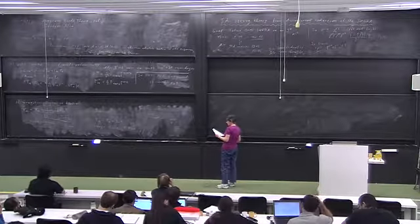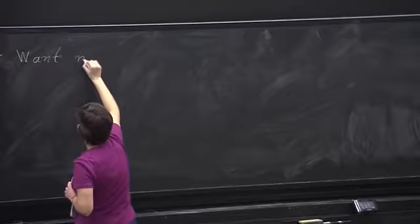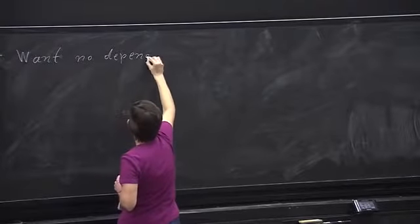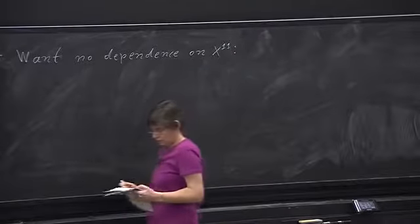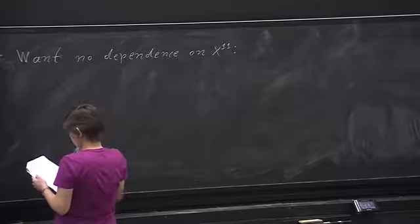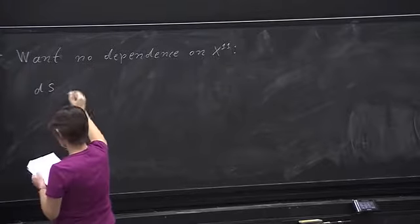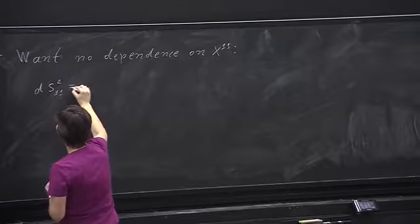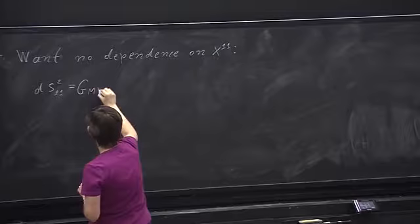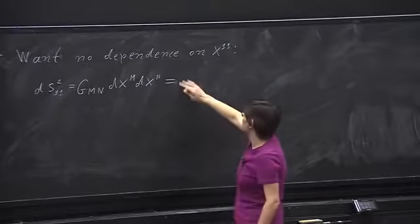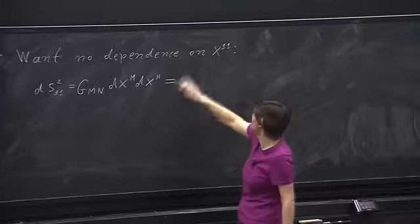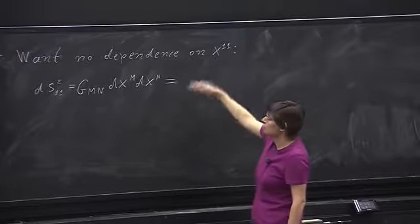Today the lecture is going to go over time. We want to reduce on a circle — the 11th dimension — so we want no dependence of the metric components on x^11. Given that, the most general metric with one isometry can be written as: ds^2 = g_mn dx^m dx^n, where we now write it in a form that explicitly shows x^11 is an isometry. The small g is the 10-dimensional metric depending only on 10-dimensional coordinates.